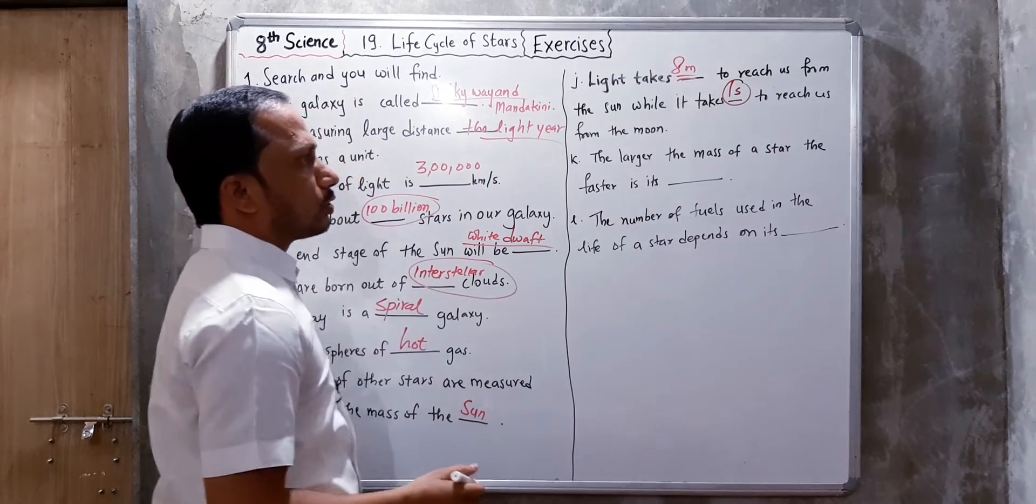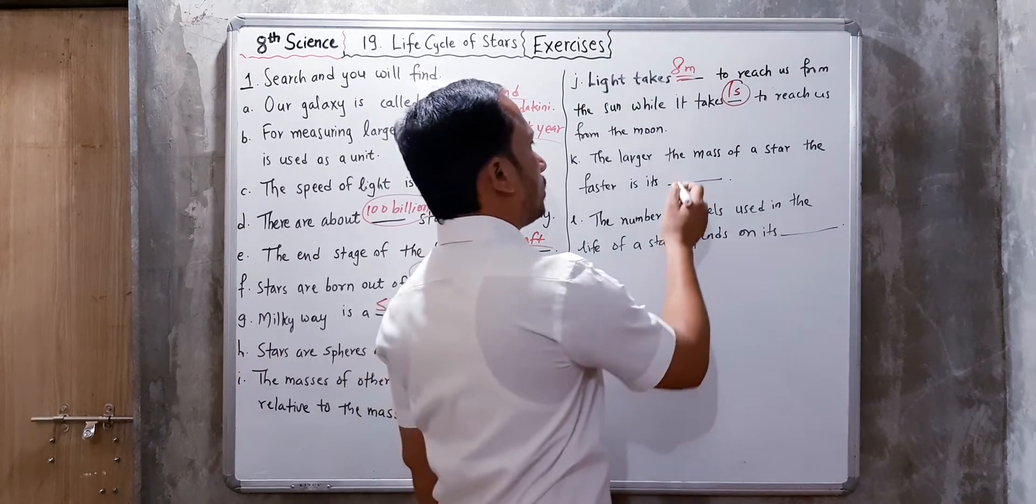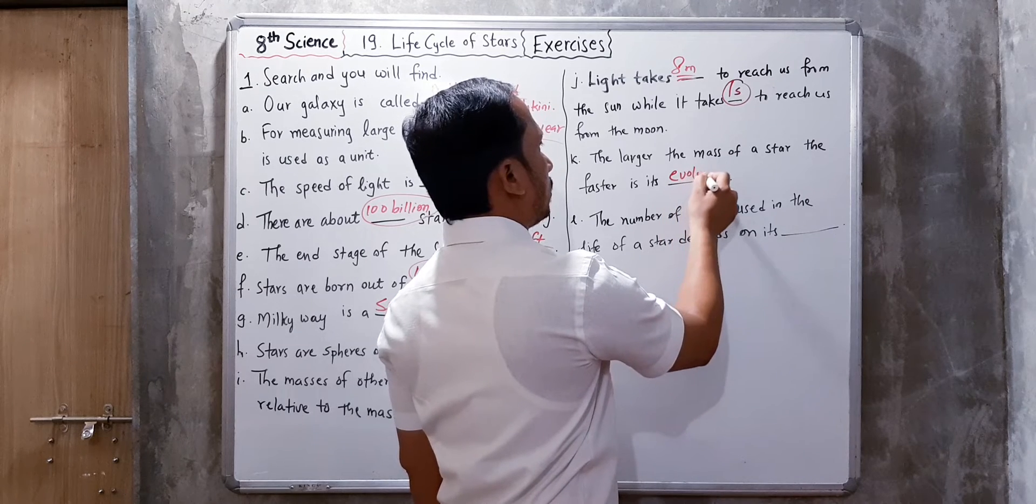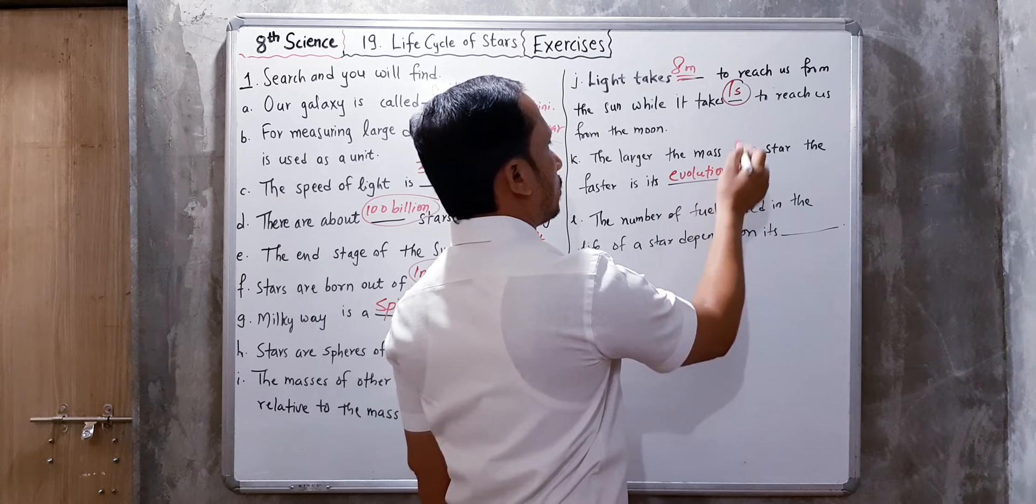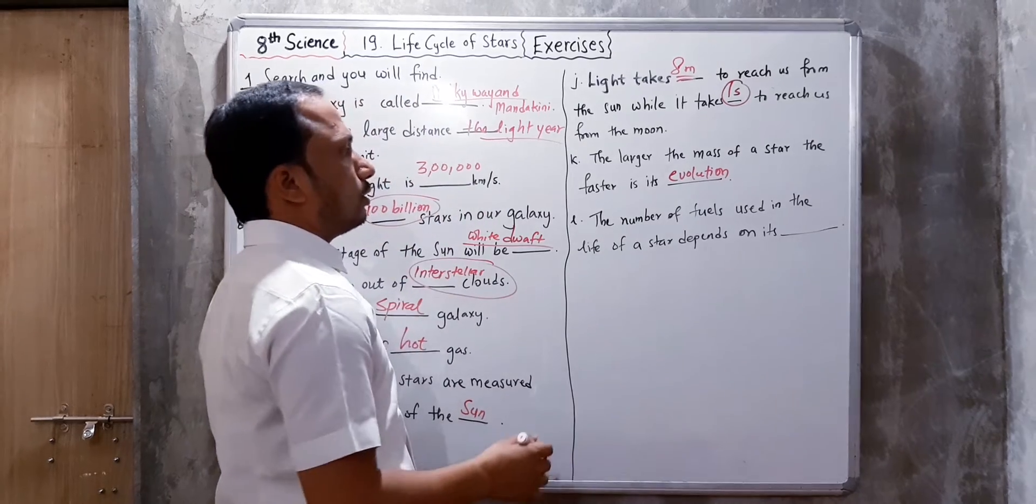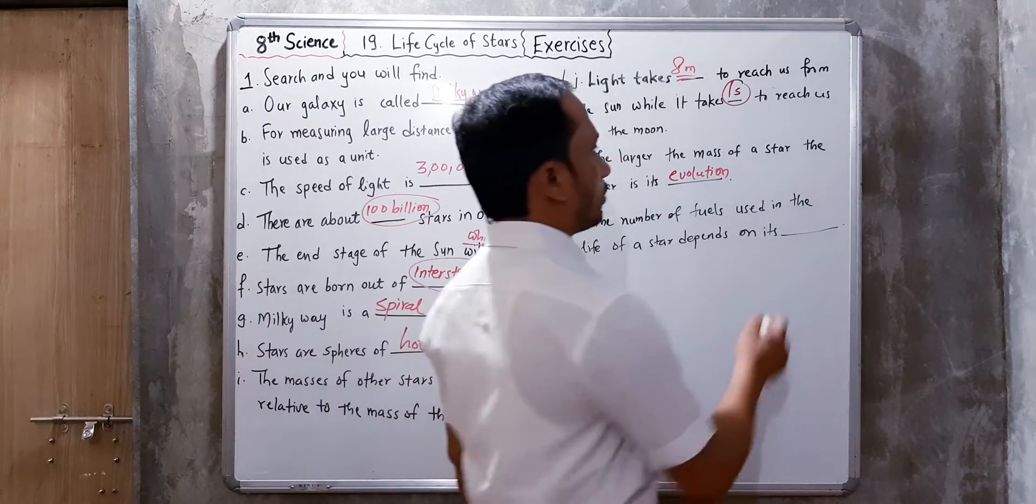The larger the mass of the star, the faster is its evolution. The number of fuels used in the life of a star depends on its mass.